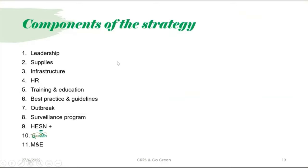The strategy components include: first, leadership and administration support; second, availability of related supplies and infrastructure needed for central lines, such as clean and dirty utility areas, hand hygiene sinks, and IV rooms; third, human resources to support healthcare staff; fourth, training and education — including specific training toward the strategy; and fifth, best practices and guidelines for central line insertion and maintenance.